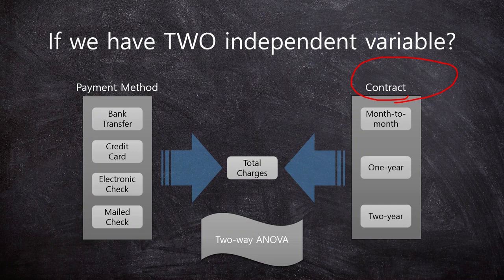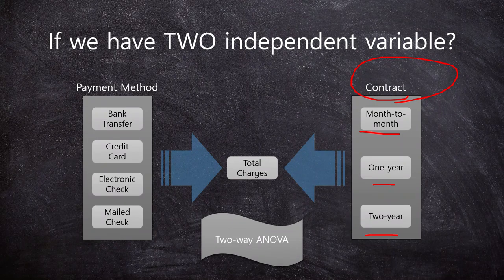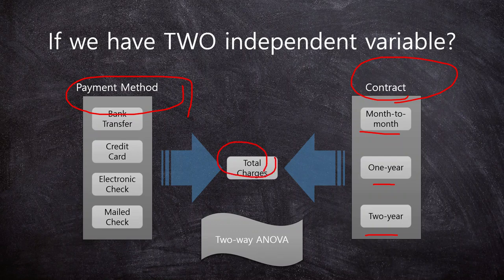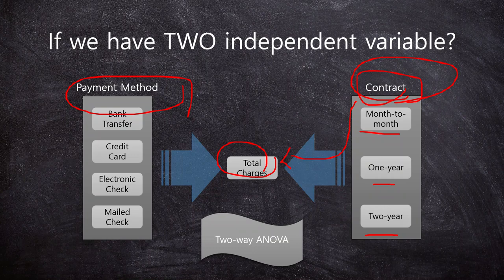This variable has three levels: month-to-month, one-year, and two-year contract. Now we have two questions. First, as we did in the one-way ANOVA, we want to know the impact of payment method on the total charges. Second, we also want to know the influence of contract on the total charges — in other words, the change of total charges depending on the level of contract.